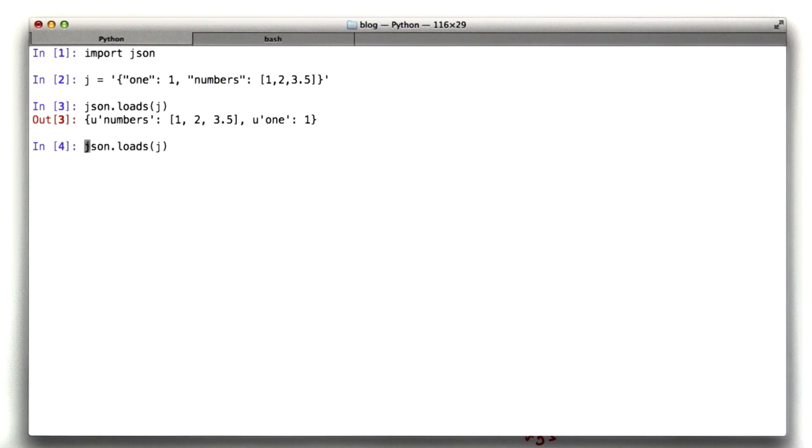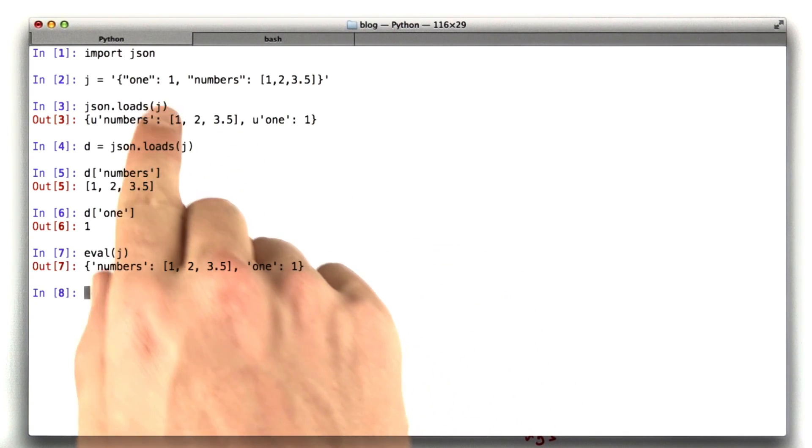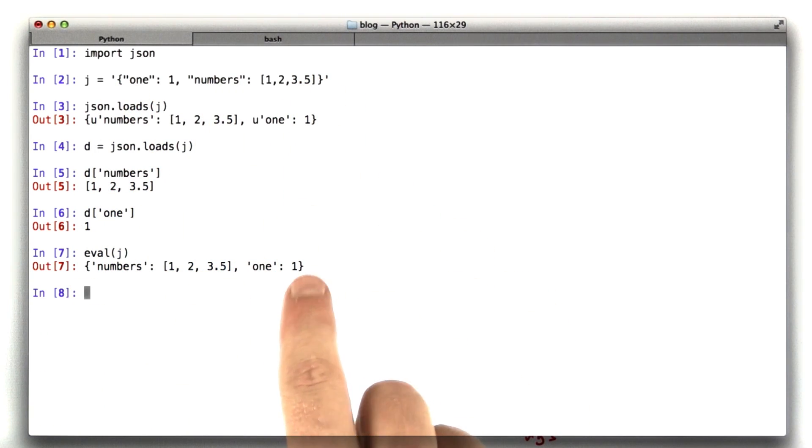If we were to store that in a variable D, we can manipulate it like this. We can look at D numbers and we get our list. We can look at D1 and we see our number 1. Because JSON looks just like Python, we could actually eval J. What eval does is actually treat this as Python code, as if I had just typed this at the prompt. And this is the result we get.